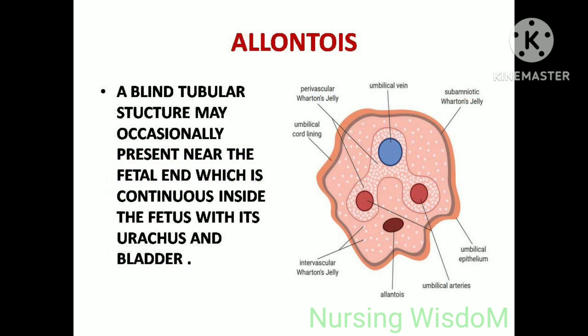The allantois is a blind tubular structure that may occasionally be present near the fetal end, which is continuous inside the fetus with its urachus and bladder.